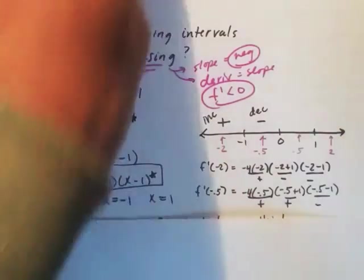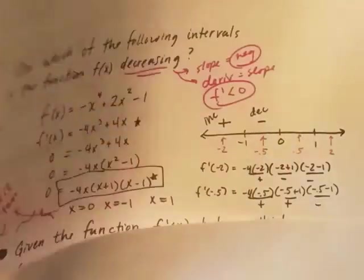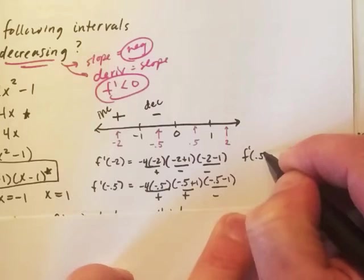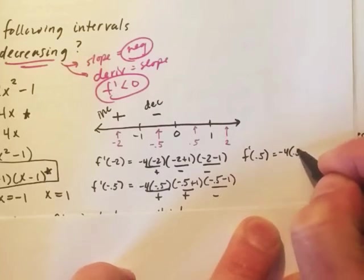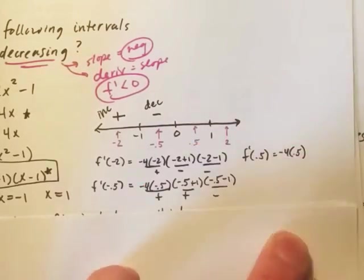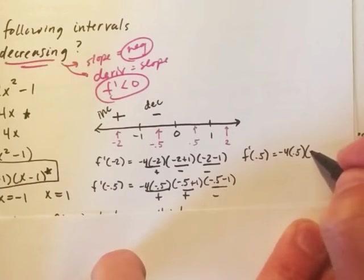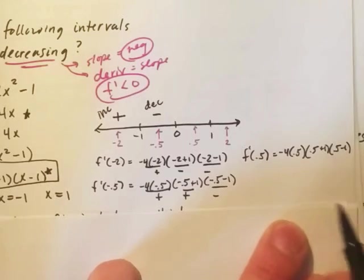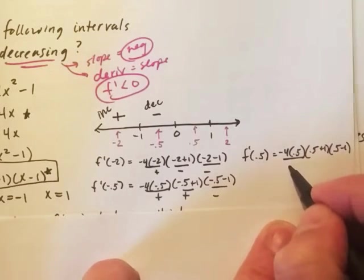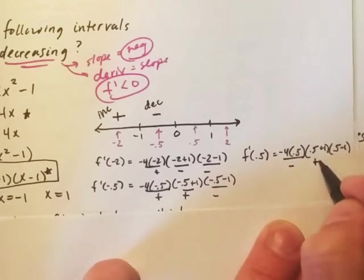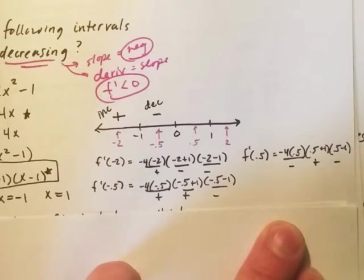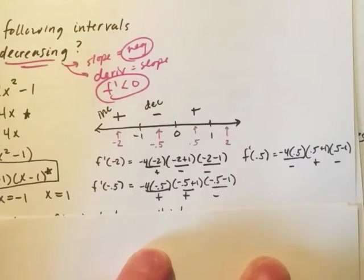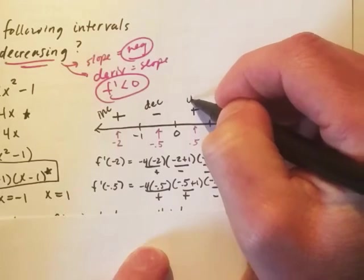Now we're going to try the same steps for 0.5 and 2. So let's actually plug in f'(0.5). And once again, I'm plugging this into the second or the first derivative, the factored form from before. And we're just looking for the sign. So negative 4 times 0.5 is going to give me a negative number. 0.5 plus 1 is positive. 0.5 minus 1, negative 1 has a greater absolute value. So that's going to turn back into a positive. So that entire interval from 0 to 1 is going to be increasing again.